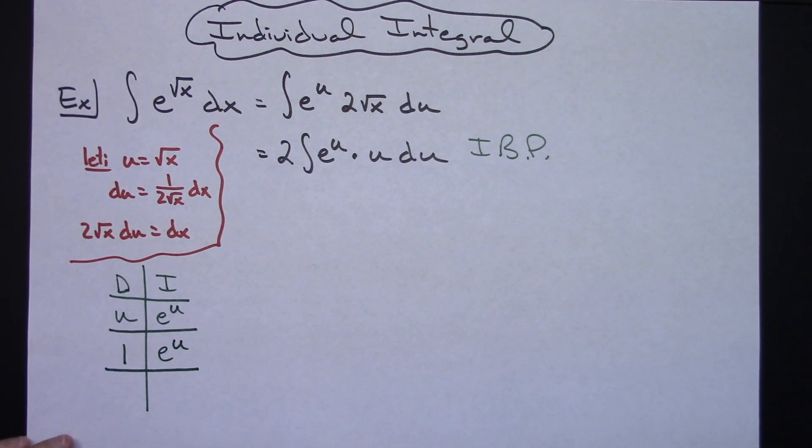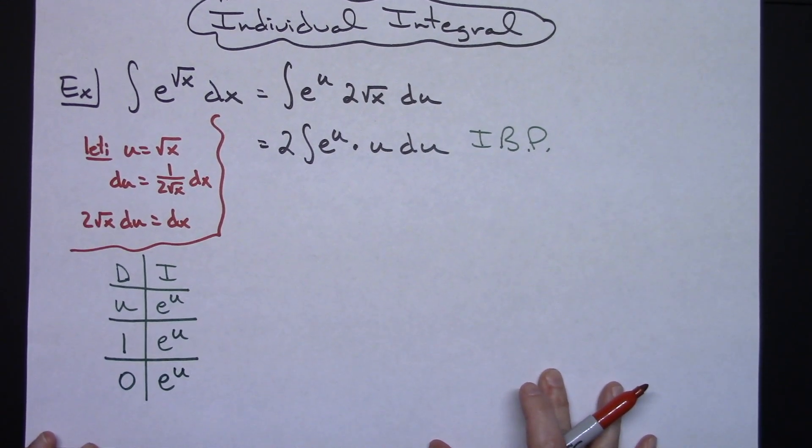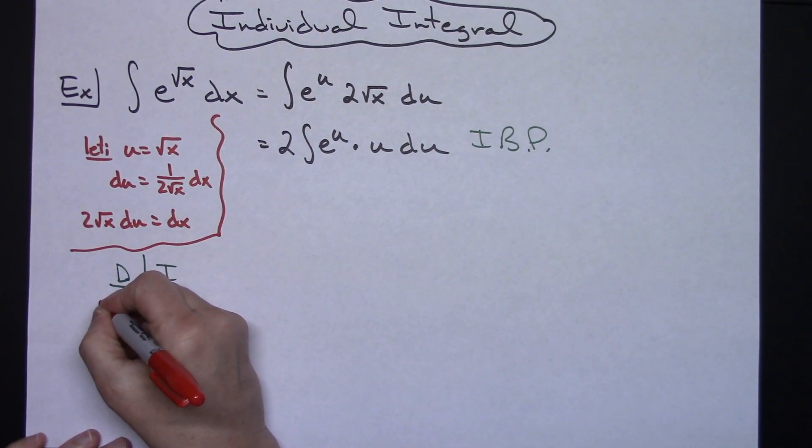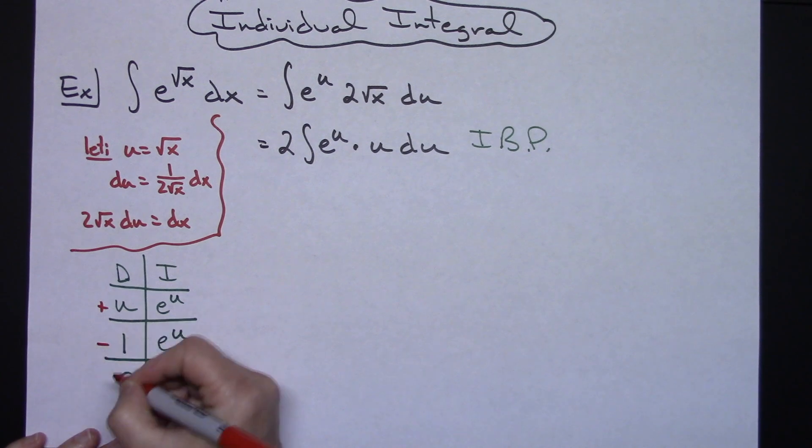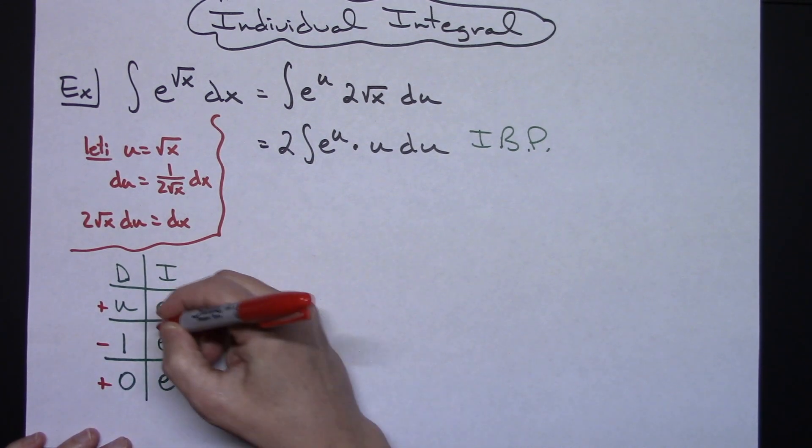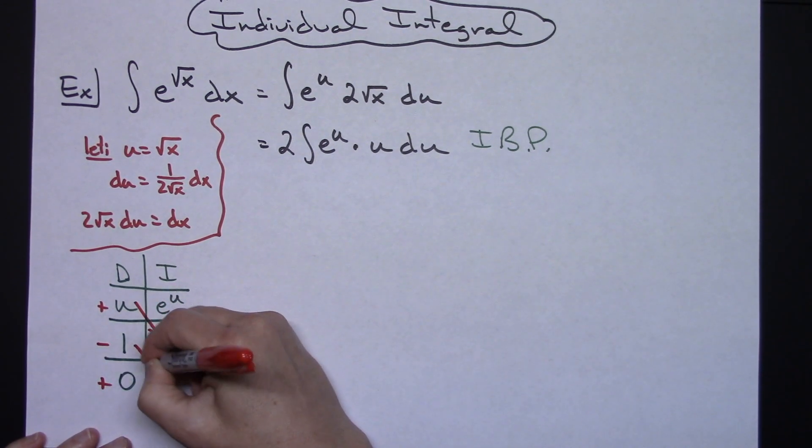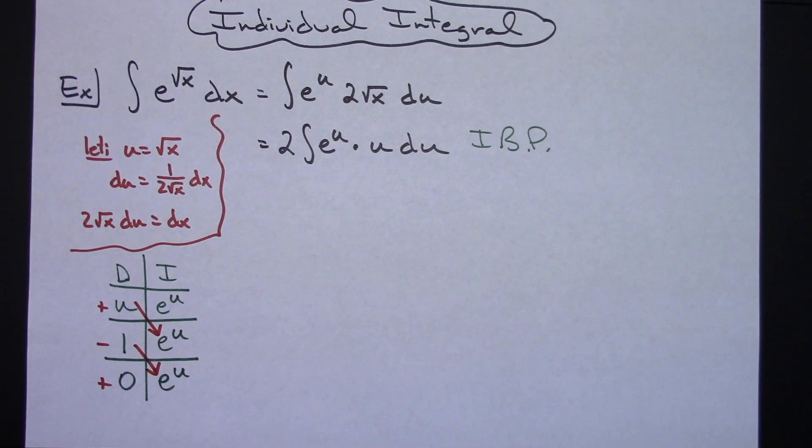Now I need to go one more time because I would like for this derivative column to get down to a 0. If I take the derivative of 1 it does go to a 0, integrating one more time I'm going to have an e to the u. Now knowing this DI method or this shortcut method, we know that we need to put a plus in front of the first one and then a minus and then a plus, and then we need to multiply on those angles to get our answer.